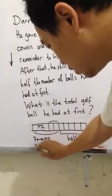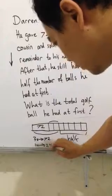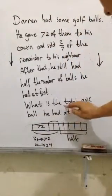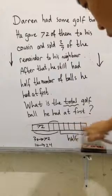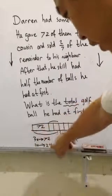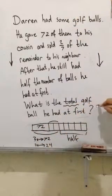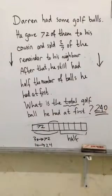1 unit is 24. And the question asks for the total — the total is 10 units, because 5 and 5 is 10 units. So 24 times 10 equals 240. Finish!